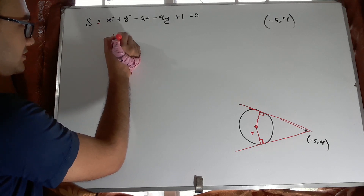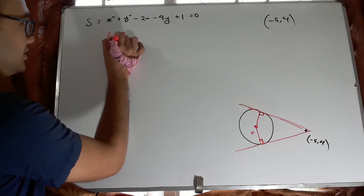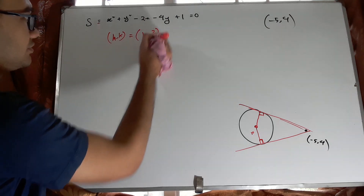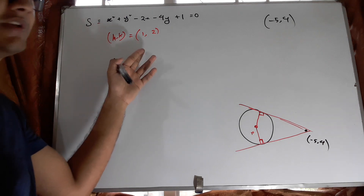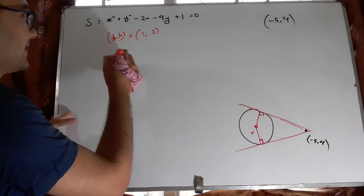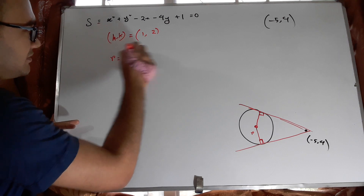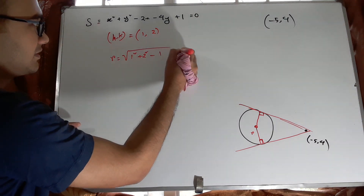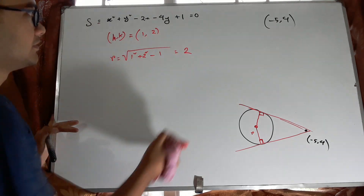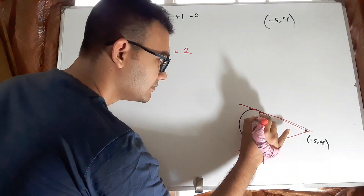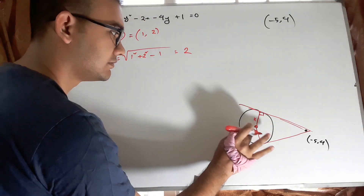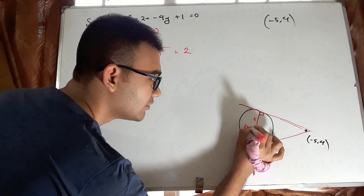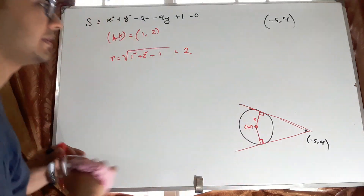Taking h and k, we get h=1 and k=2 as the center. For the radius: 1 squared plus 2 squared minus 1, which gives radius equals root 2. So the center is (1, 2) and the radius is root 2.